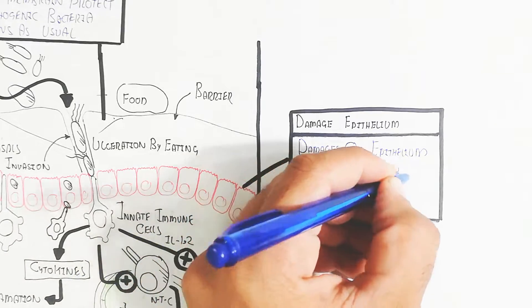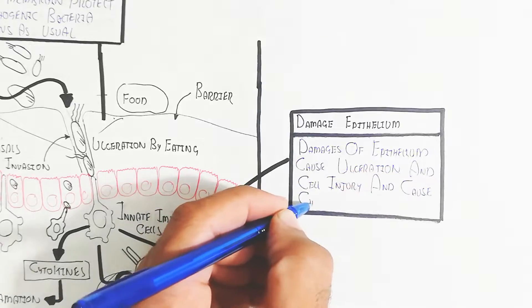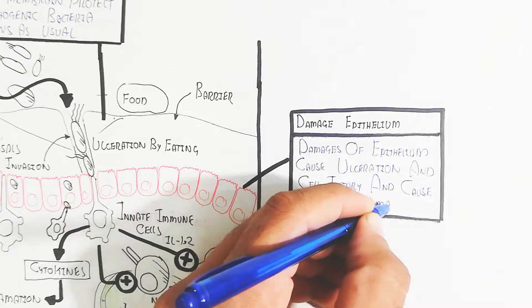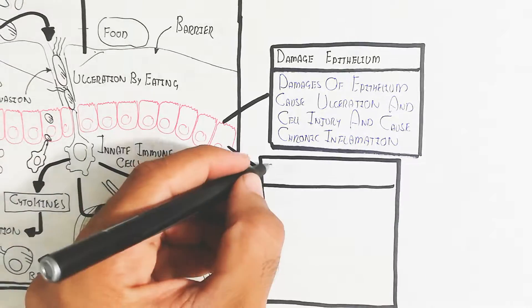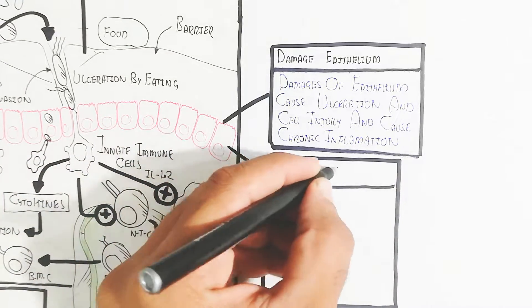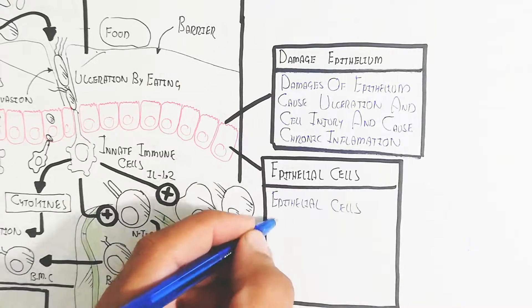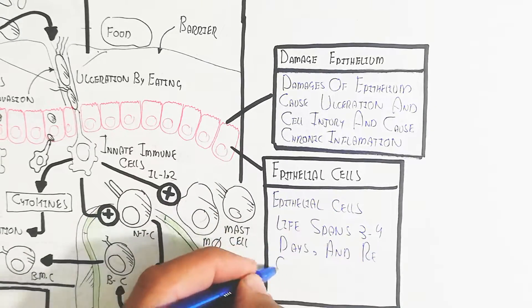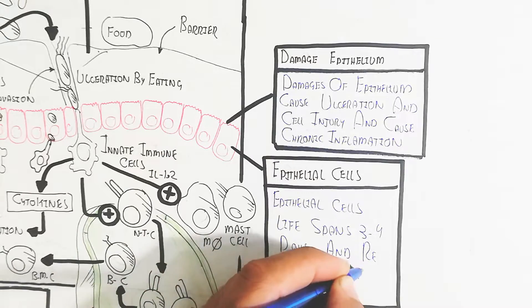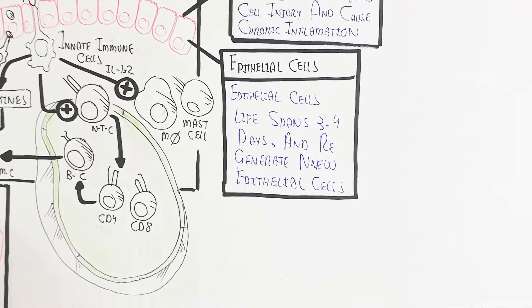The damage of epithelium causes ulceration and cell injury and causes chronic inflammation. The infected epithelium produces inflammatory cytokines and recruits immune cells for killing and clearing pathogenicity and infection. The epithelium cell lifespan is three to four days and it regenerates new epithelial cells. Remember this.